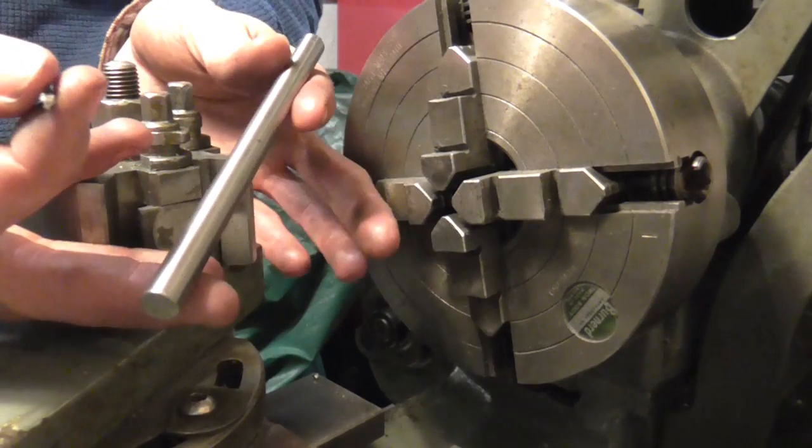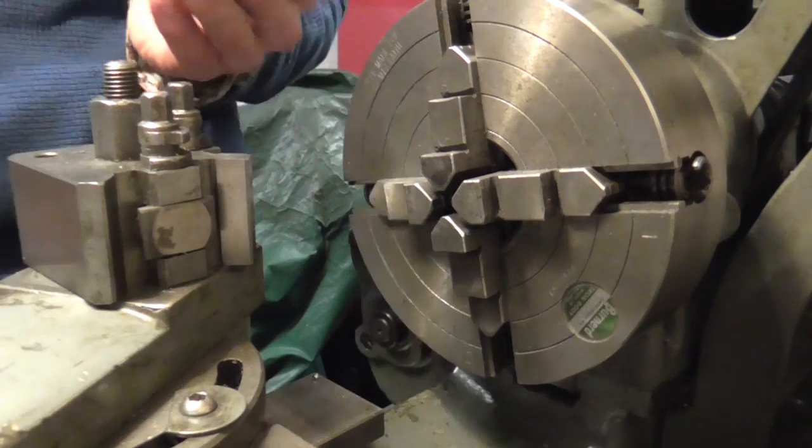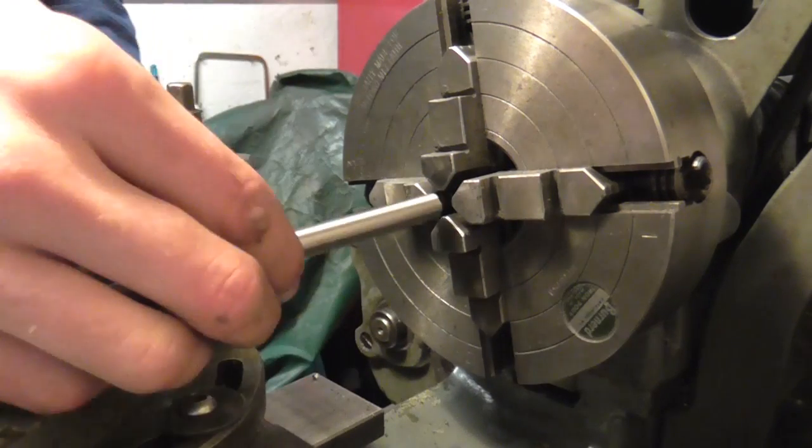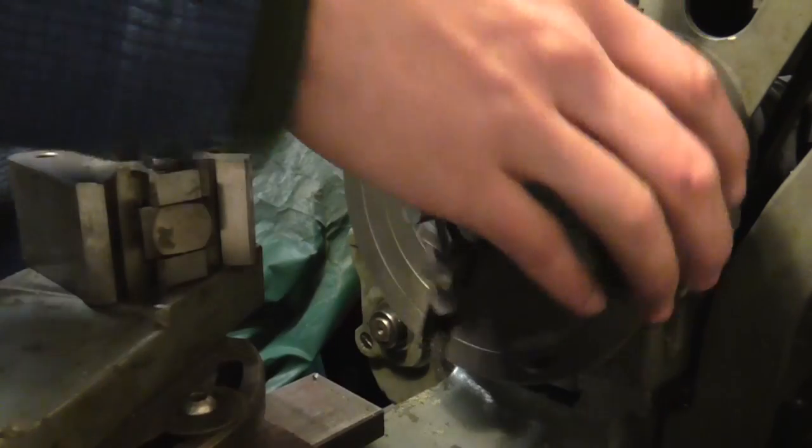First up I've got this piece of silver steel and I'm going to machine each end to accept a tap. Why am I using a 4 jaw? Purely because my 3 jaw has a lot of run out.